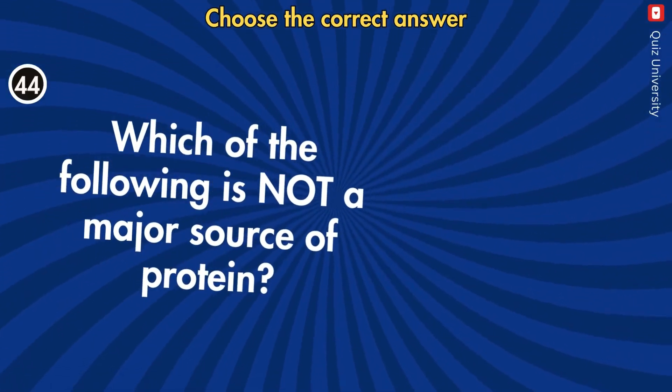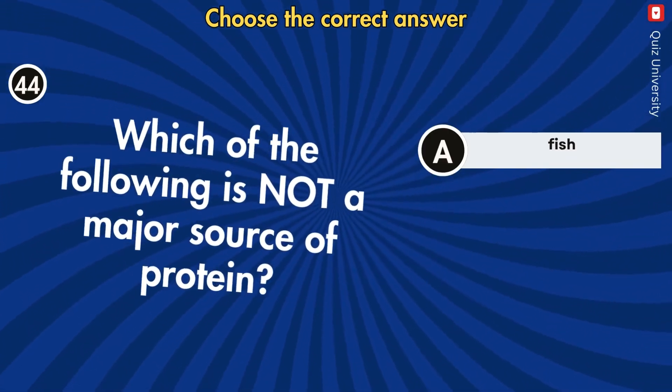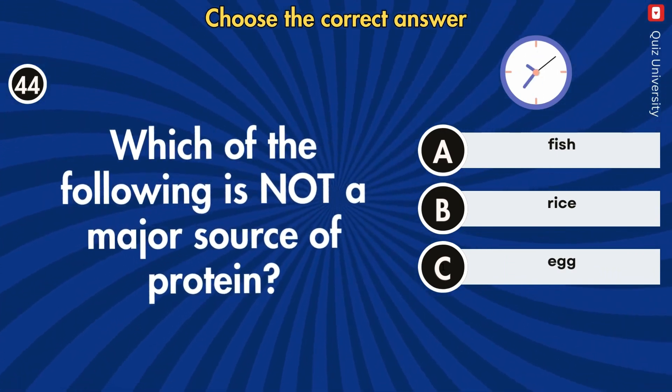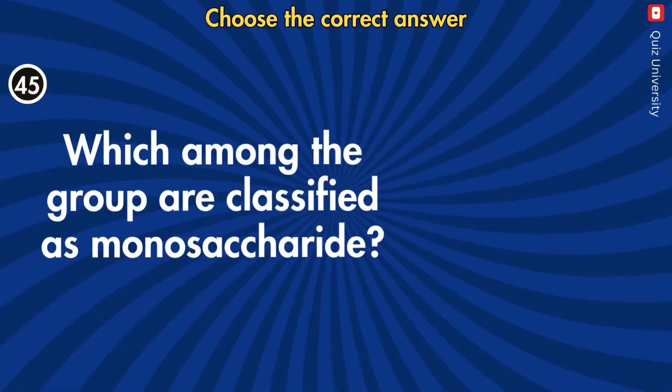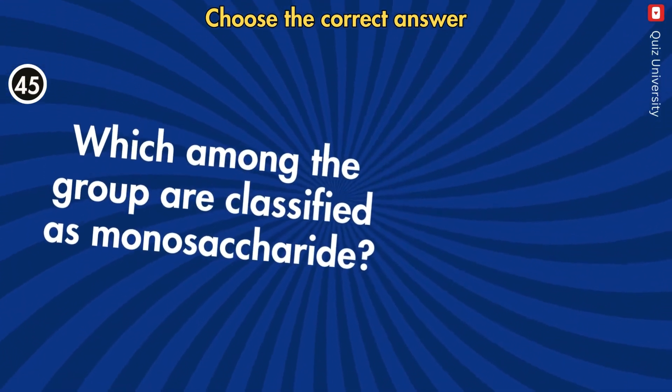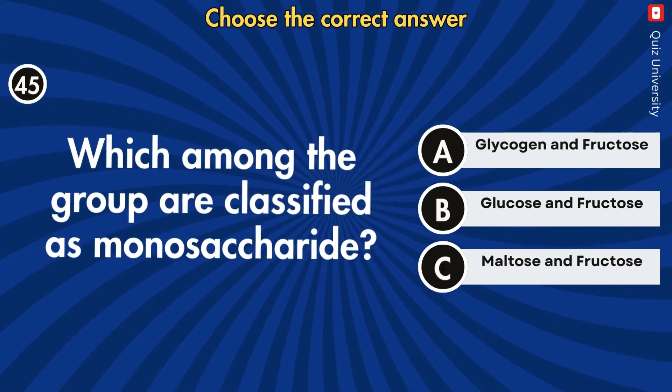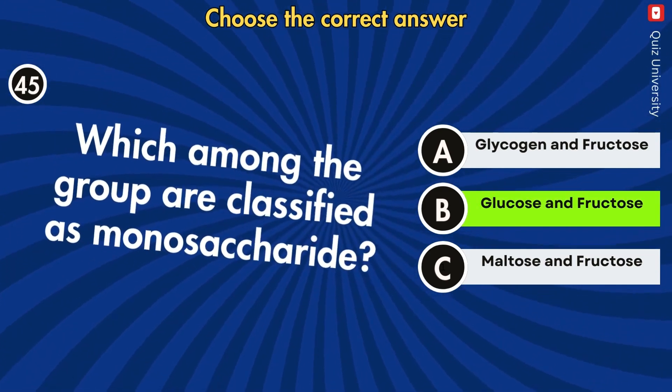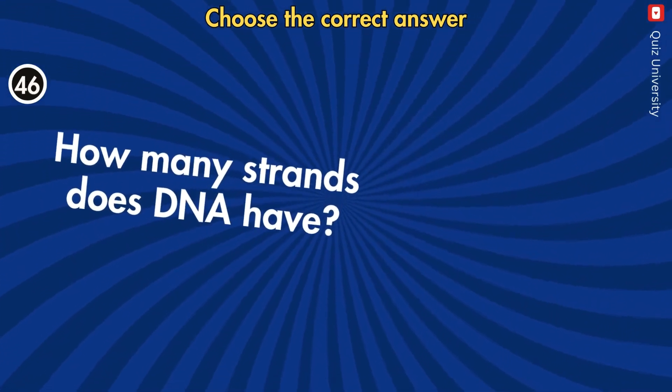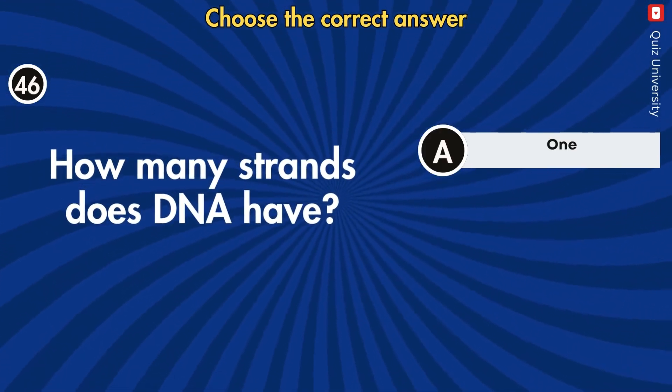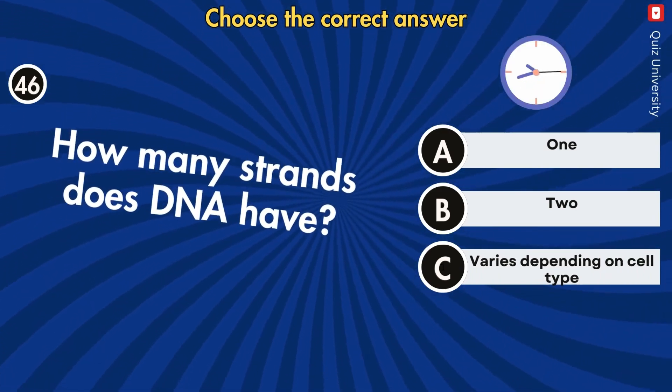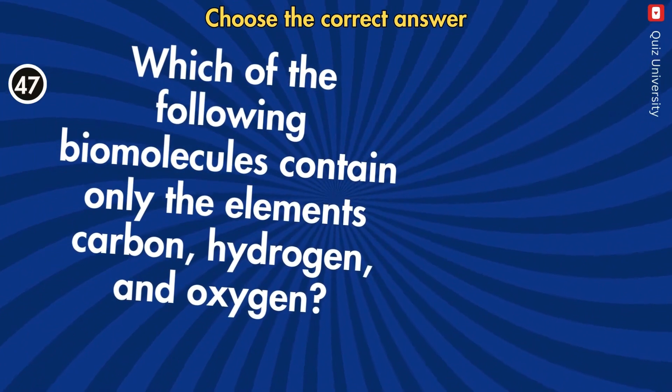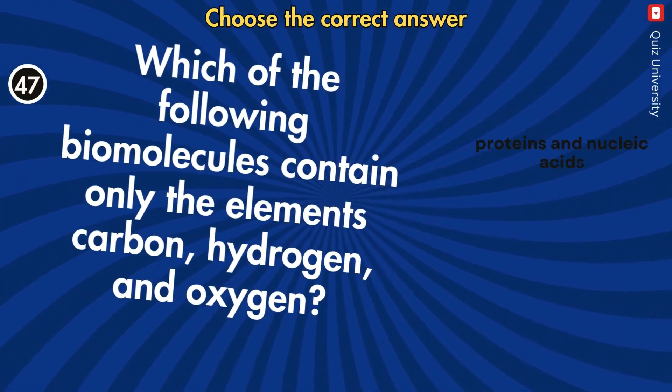Which of the following is not a major source of protein? Which among the group are classified as monosaccharide? How many strands does DNA have?